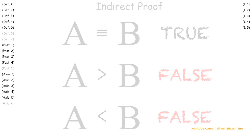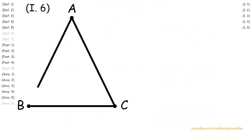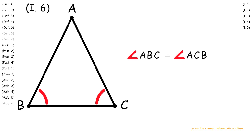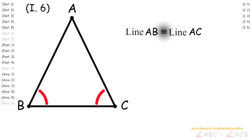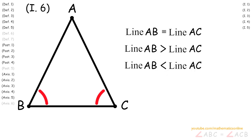To begin Proposition 6, we are given triangle ABC, and angle ABC is congruent to angle ACB. What we want to prove in the end is that line AB is congruent to line AC. But we must also consider the other two possibilities in an indirect proof: line AB can be greater than line AC, or line AB can be less than line AC.